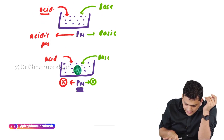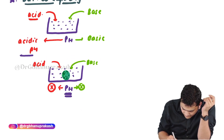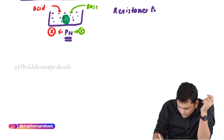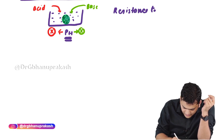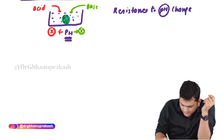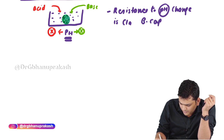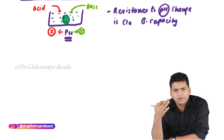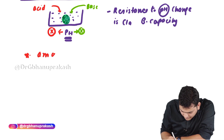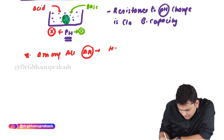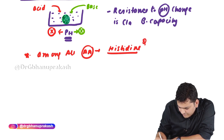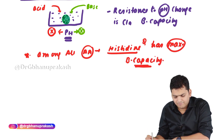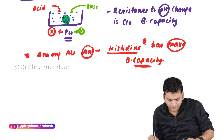This resistance to the pH change is referred to as buffer capacity. Buffer capacity is defined as the resistance to the pH change. Among all the amino acids, histidine has the maximum buffer capacity. This is the key point to remember for buffer capacity.